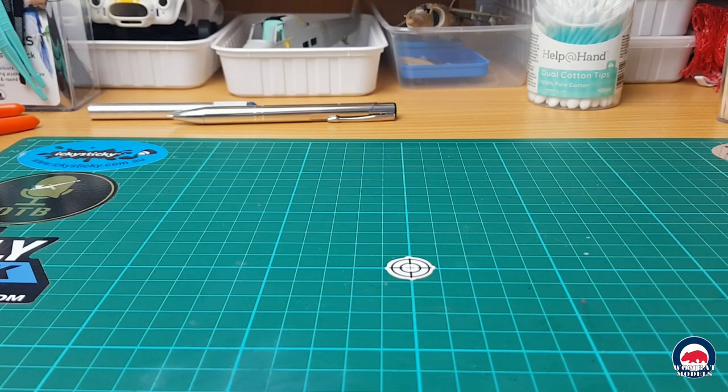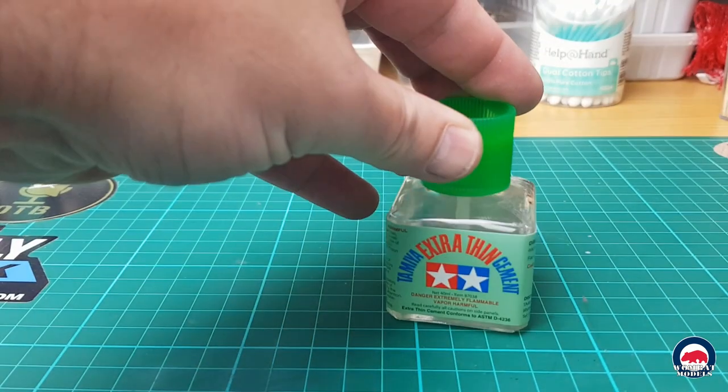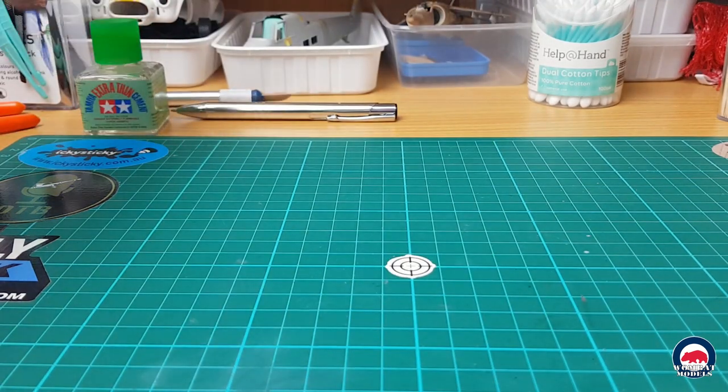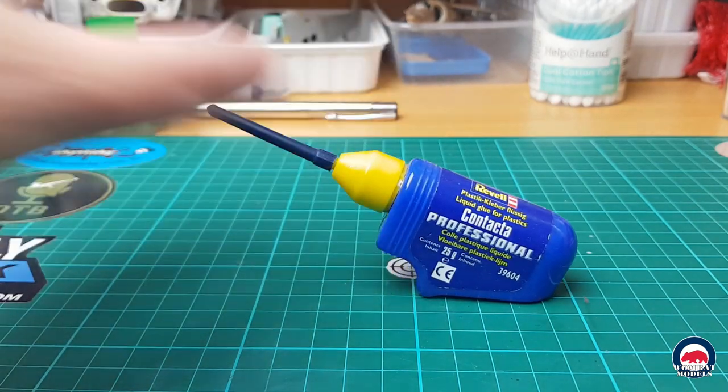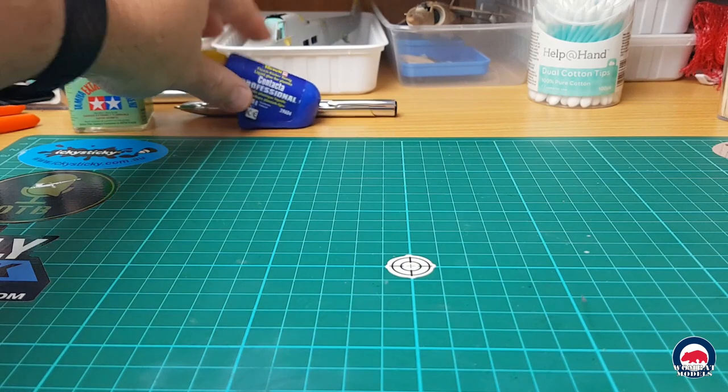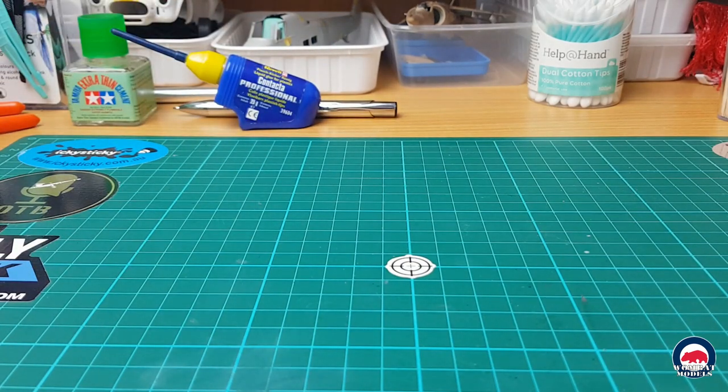And when it comes to sticking stuff together, well, we've got the staple of most modelers, the Tamiya Extra Thin, a fantastic adhesive there, and also still use the old Revell Contacta Professional. It has its applications, although not a lot of people seem to like using it these days.